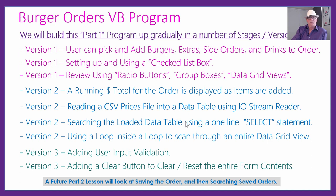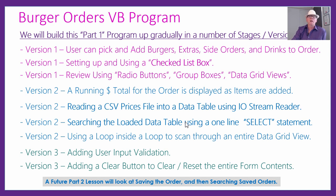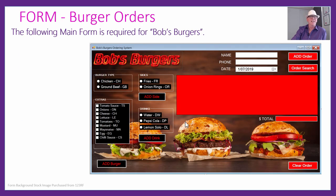In a future part two lesson, when they add the order it's going to save it to an external file so that everyone's orders are stored. Then you'll be able to do a search — put in someone's name, phone number, and the date, and it will search through that external file to find their order and display it on screen. But that's all going to be in part two, because as you'll see there's enough work here in part one.